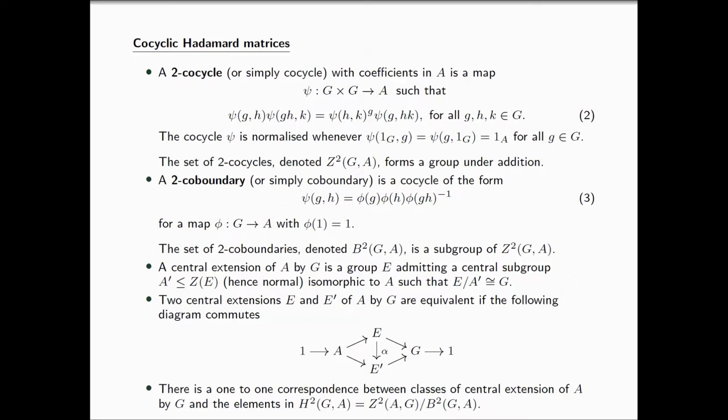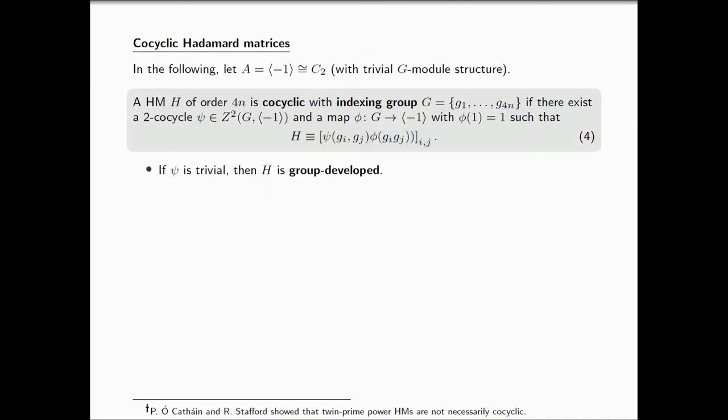Now that we have introduced all of these definitions, I'm ready to introduce the actual definition for a co-cyclic Hadamard matrix. I'm going to work with C2, so A is the cyclic group of order two generated by negative one. I'm thinking of these multiplicatively, and G has a trivial G-module structure on A. A Hadamard matrix of order 4N is co-cyclic with indexed group G if there exists a 2-cocycle psi and a map phi, such that the matrix H is equivalent to a matrix of this form, which we call a co-cyclic Hadamard matrix.